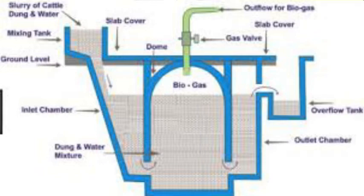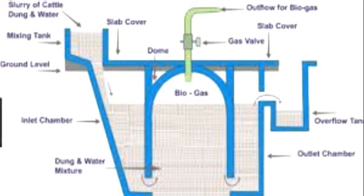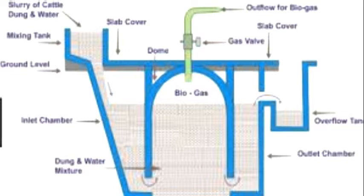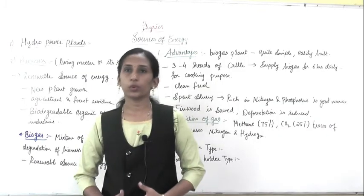Working of the biogas plant: cattle dung and water are mixed in equal proportion in a mixing tank to form slurry. This slurry is fed into the digester tank through the inlet. When the digester tank is filled about two-thirds of its capacity, the dome is left free for collection of biogas. The slurry undergoes anaerobic fermentation and biogas is produced after 50 to 60 days. As biogas collects in the dome, it exerts pressure, pushing spent slurry to the overflow tank, and fresh slurry is fed in for a continuous supply. The spent slurry is used as manure.